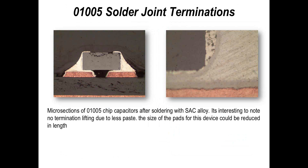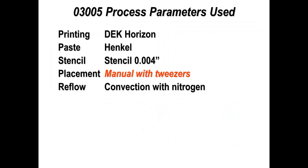Microsections — some examples of solder joints formed. Nothing's really special; we've been able to solder them with vapor phase and convection perfectly happily. The problem sometimes is doing microsections on very small parts. There's a little bit of cracking on the ceramic in the image on the left-hand side, but that's a microsectioning fault, not an assembly fault. The important thing is the solder joints have been produced successfully.